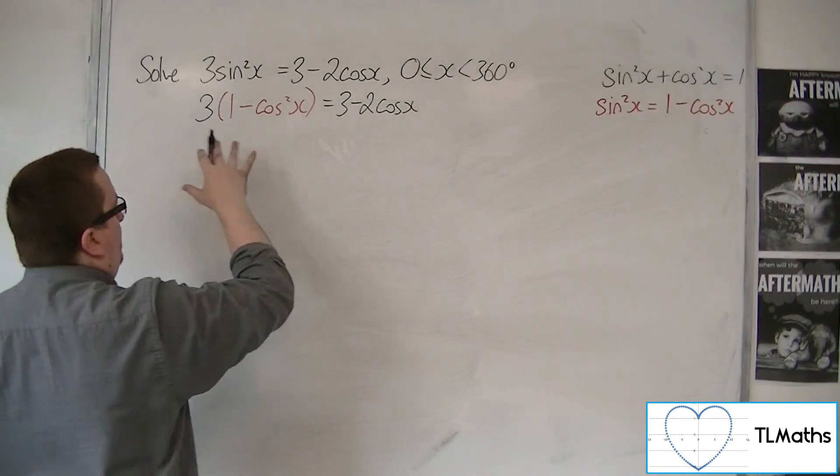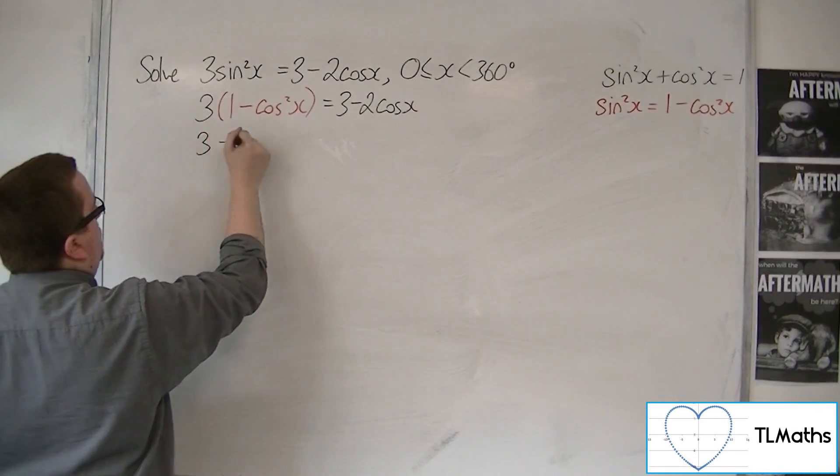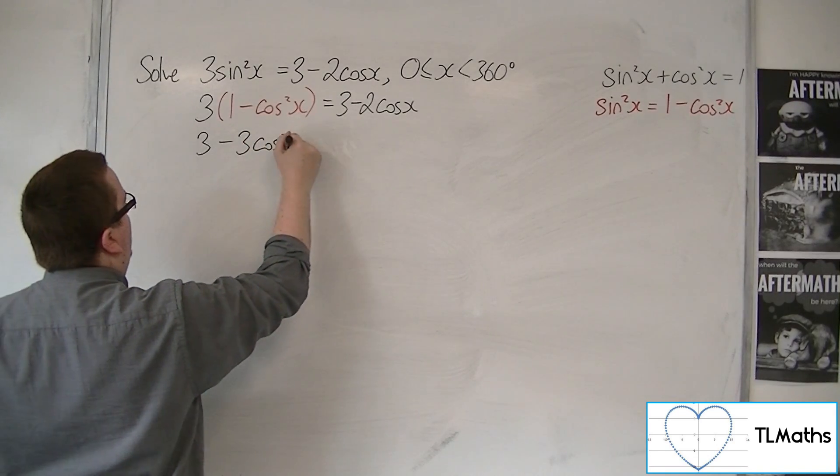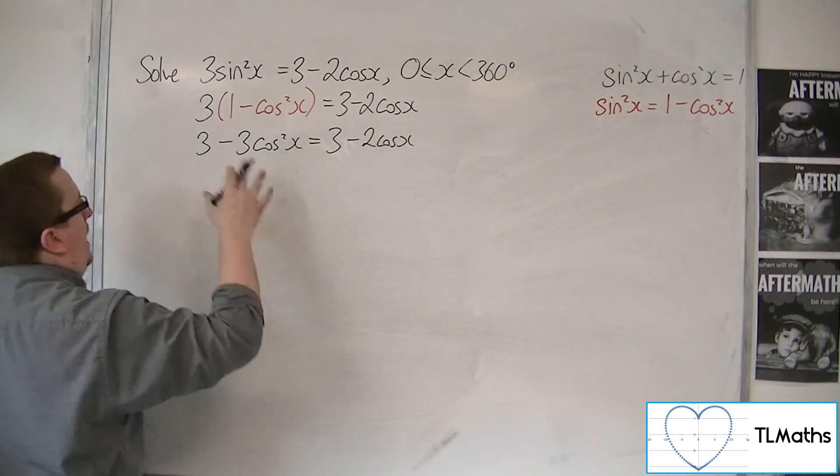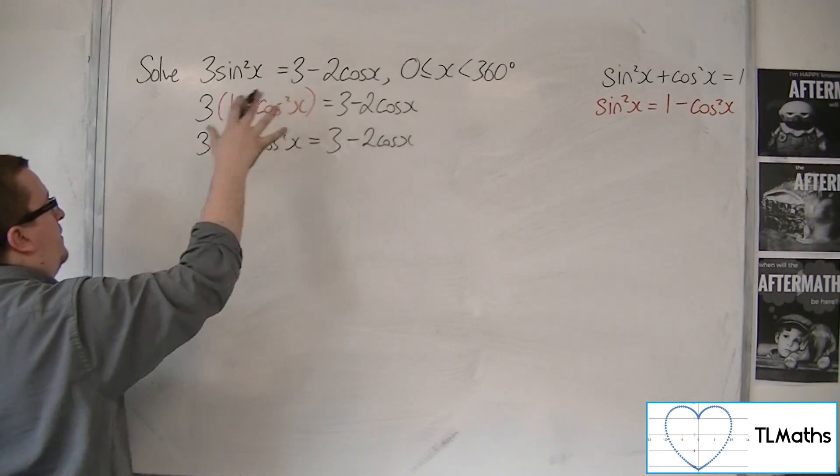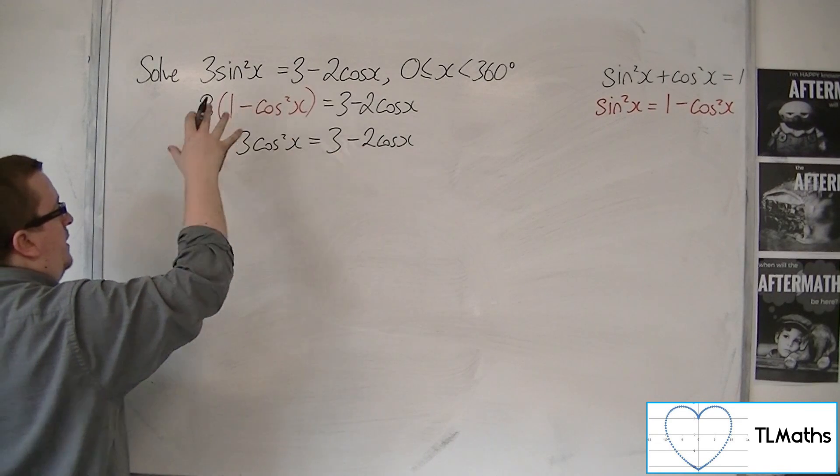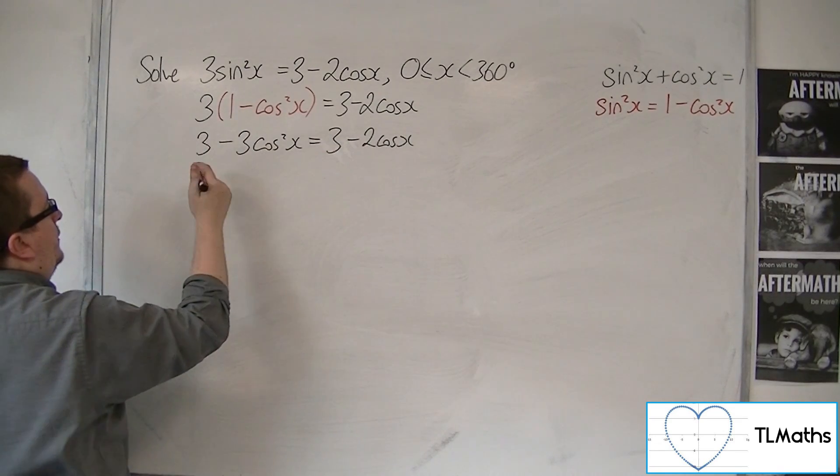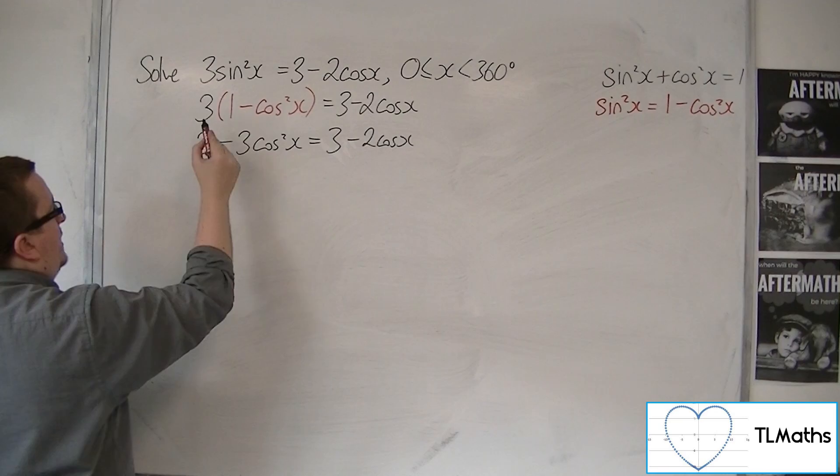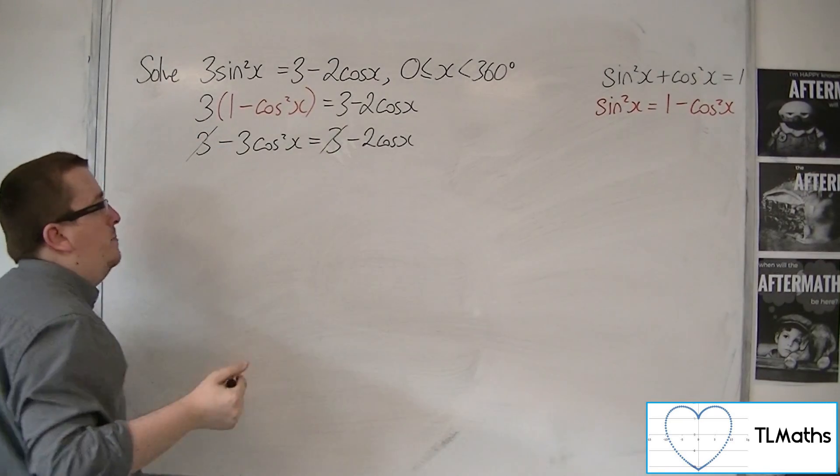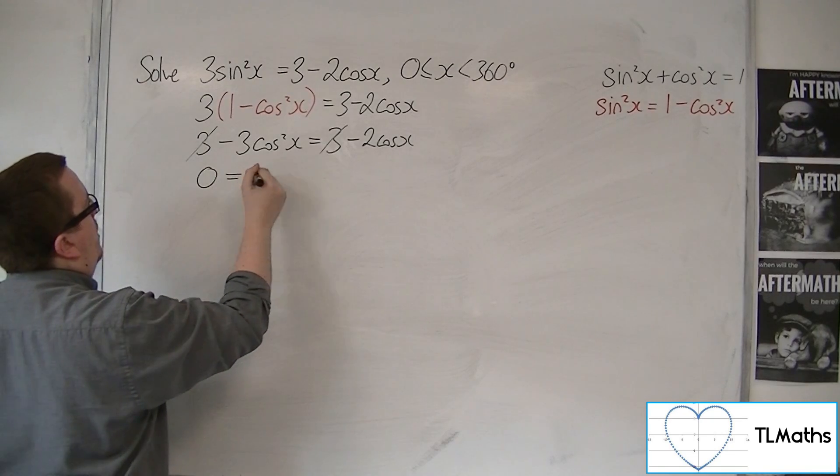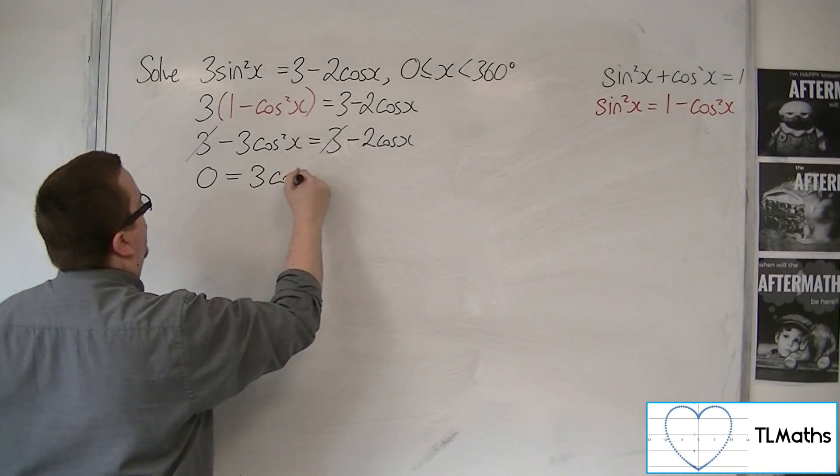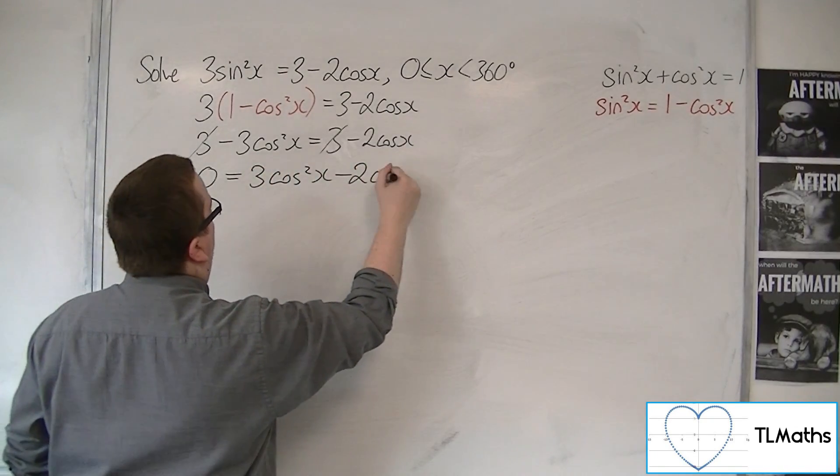You can now expand the brackets out. So 3 minus 3 cos squared x is 3 minus 2 cos x. And then take everything onto one side of the equation. So if I move everything onto the right-hand side, what I can see is that I can take 3 from both sides. So they both cancel. And that's going to leave me with 0 is equal to 3 cos squared x minus 2 cos x.